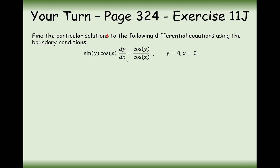Let's have a go at this question. We want to move all the x's onto the right hand side and all the y's onto the left hand side. So I'm going to times by dx, divide by cos y, and divide by cos x all in one go. I'll have sin y divided by cos y dy equals cos x divided by cos squared x, which simplifies. Then I apply integration to both sides — I'm integrating tan on the left, and on the right hand side I'm integrating sec squared.